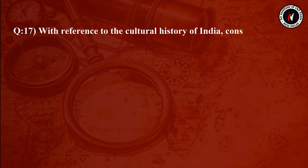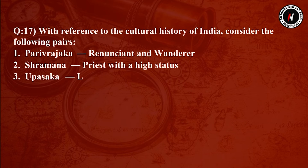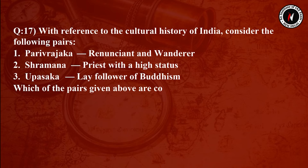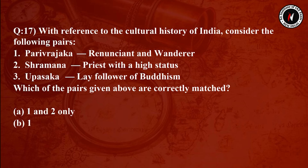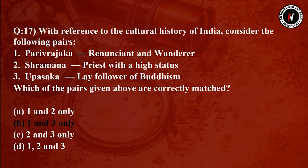Question number 17: With reference to the cultural history of India, consider the following pairs — 1: Parivrajaka – renunciant and wanderer. 2: Shramana – praised with high status. 3: Upasaka – lay follower of Buddhism. Which pairs are correctly matched? Option A: 1 and 2 only. Option B: 1 and 3. Option C: 2 and 3 only. Option D: 1, 2 and 3.